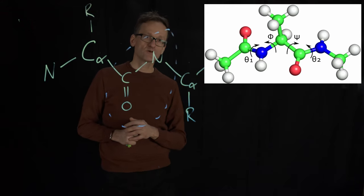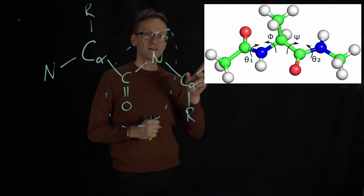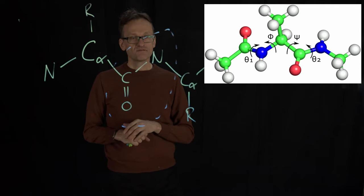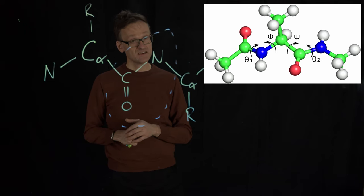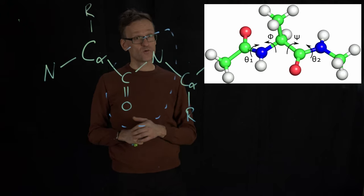That means we just have those other two bonds that we call Phi and Psi. They are by far the most important bond rotations in amino acids, and you're going to need to remember them and know which ones they are.